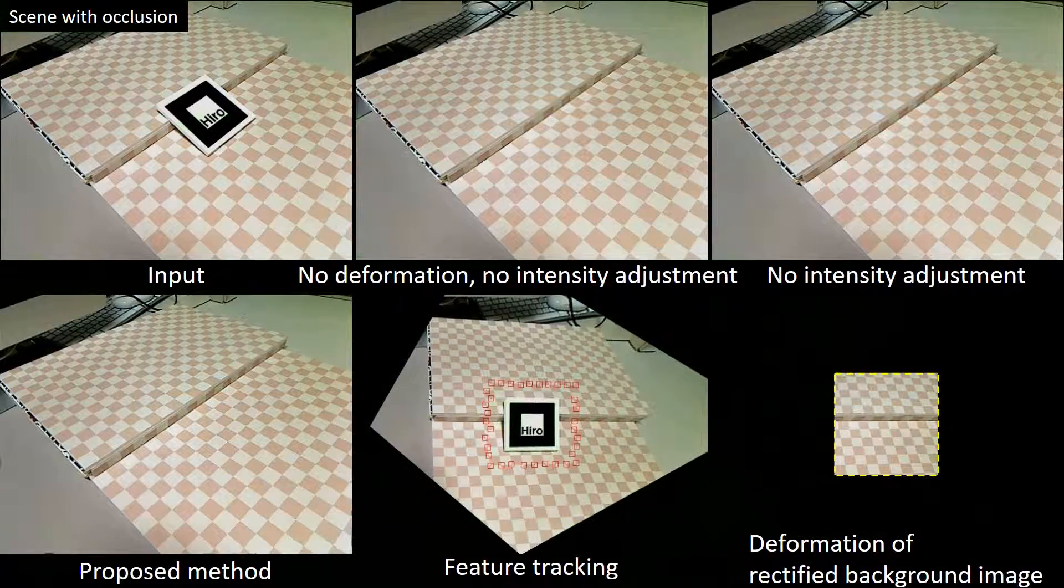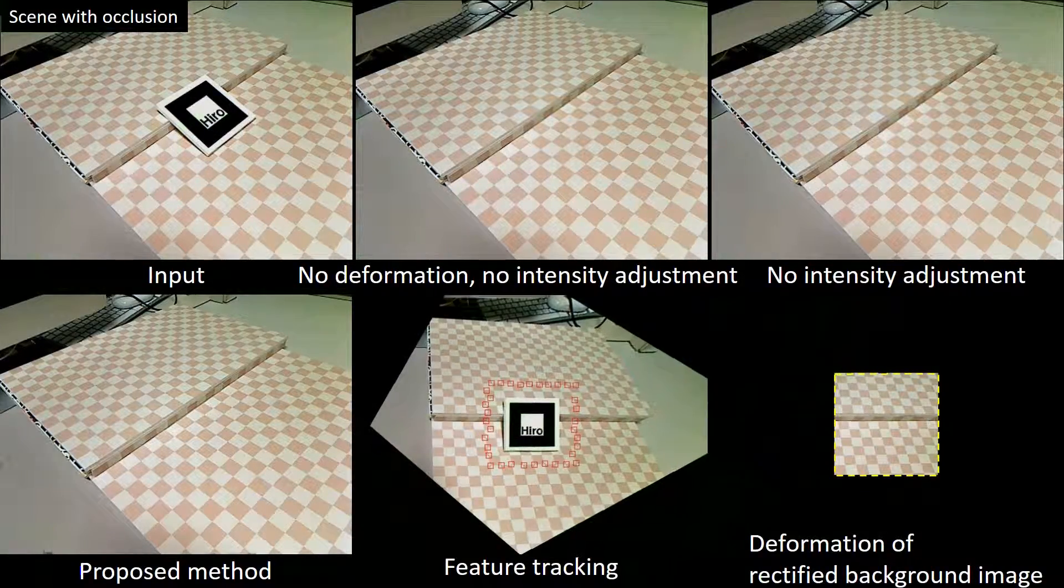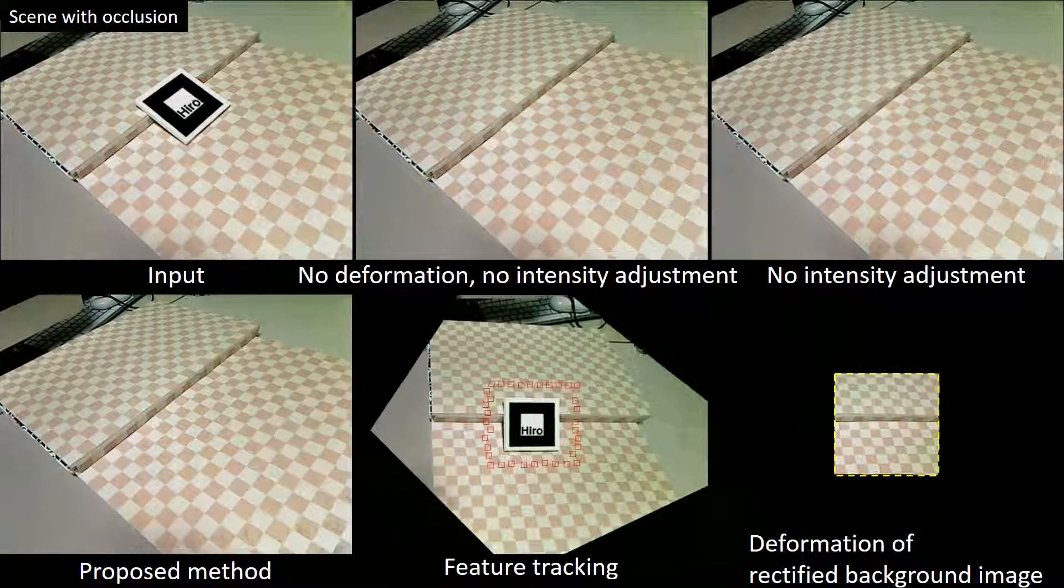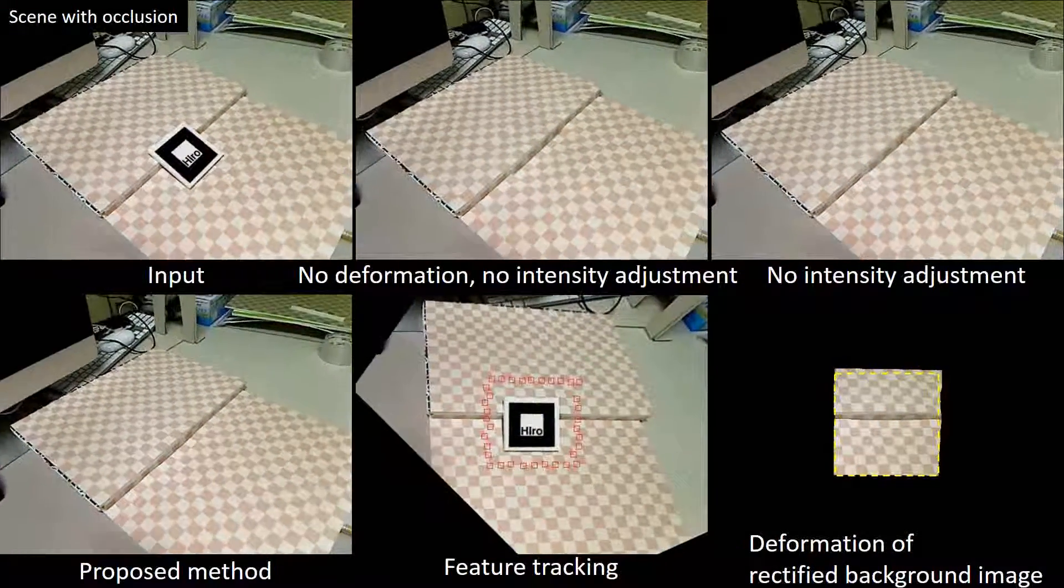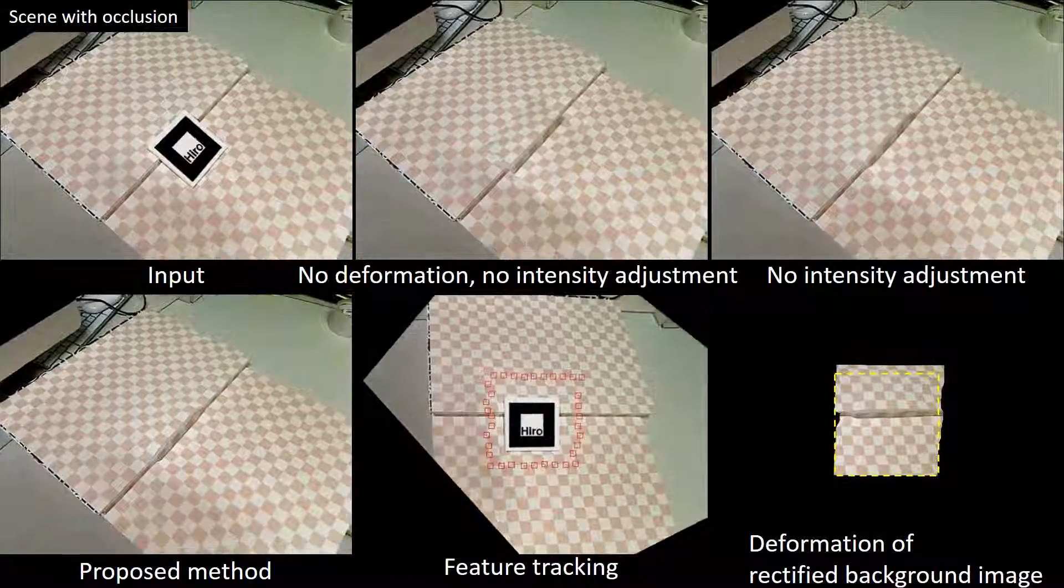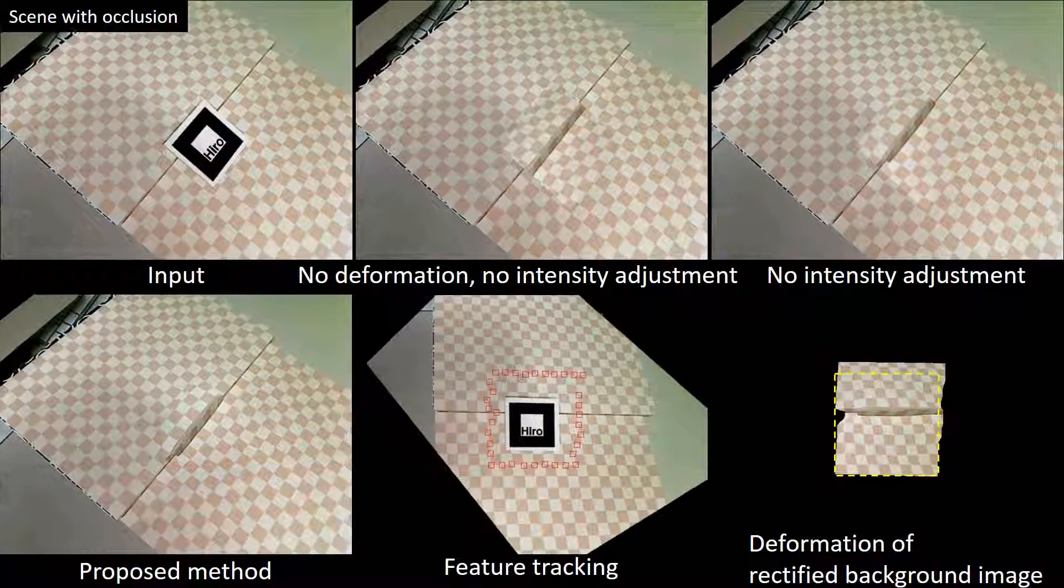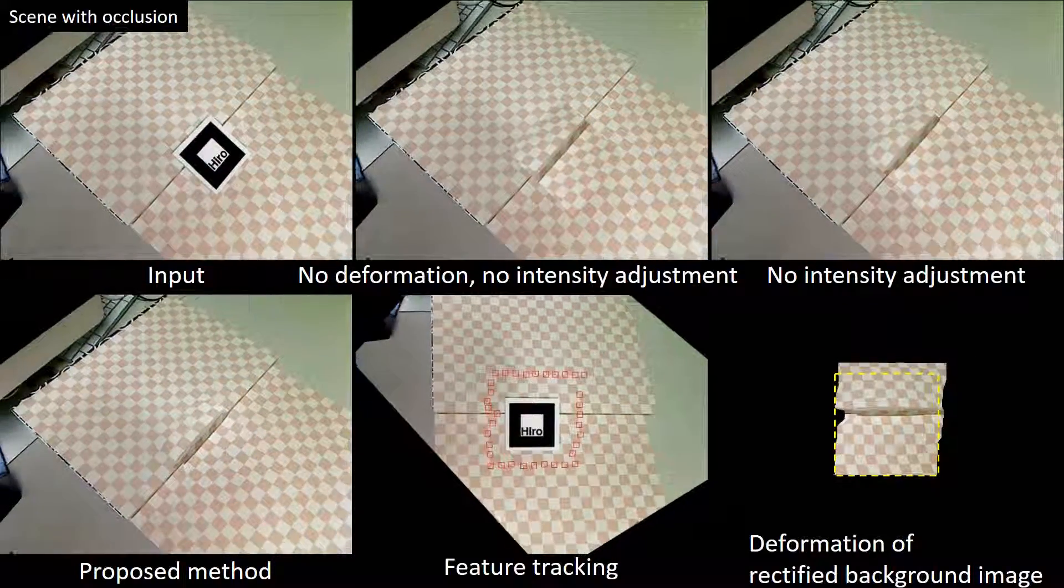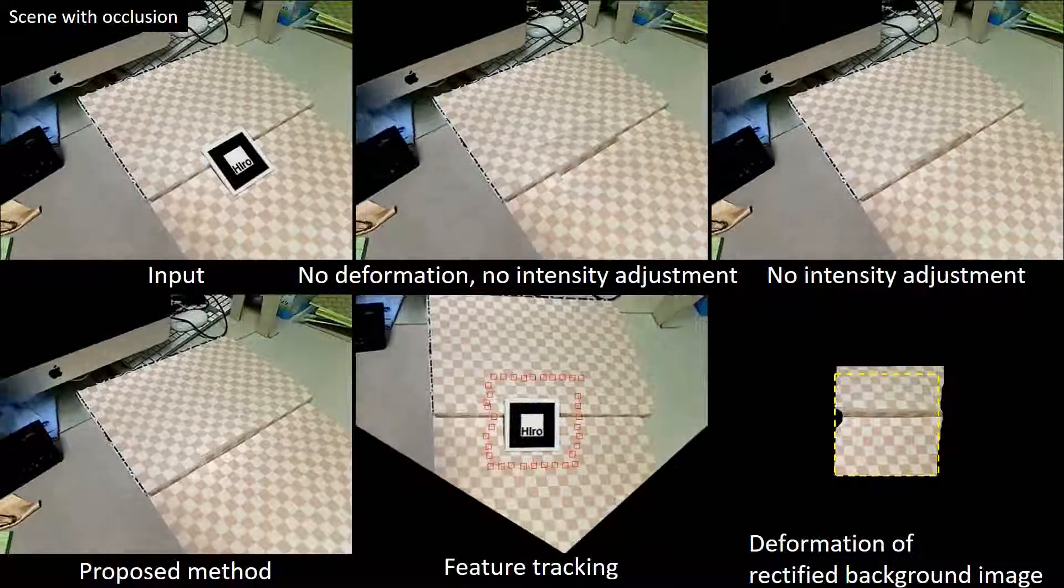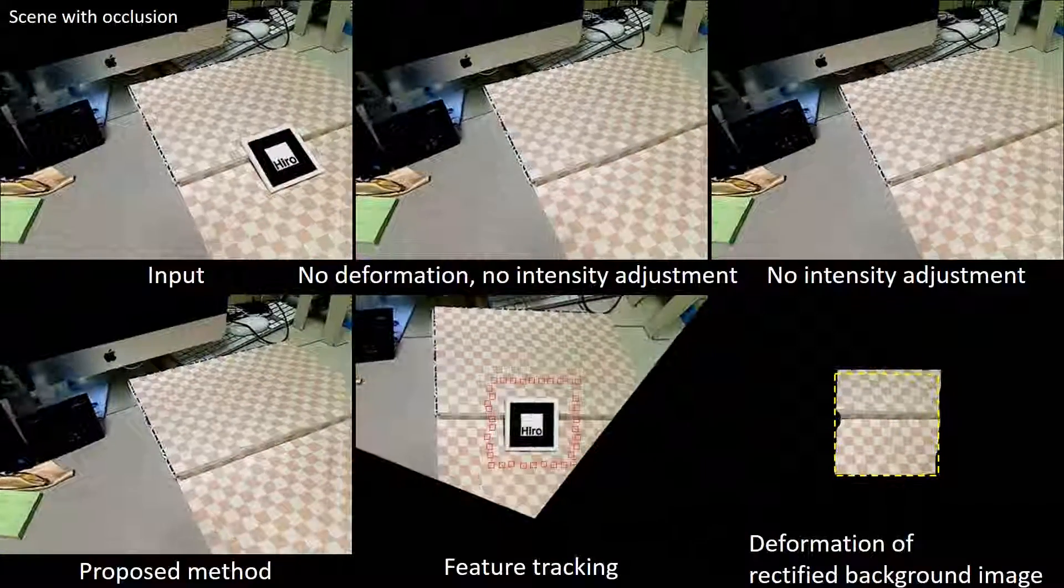We show the limitations of the proposed method using two scenes. In the scene with occlusion, the vertical plane is occluded in the input frame depending on the camera pose. In this case, the result of our proposed method still shows the vertical plane in the marker regions, while other regions are handled correctly.